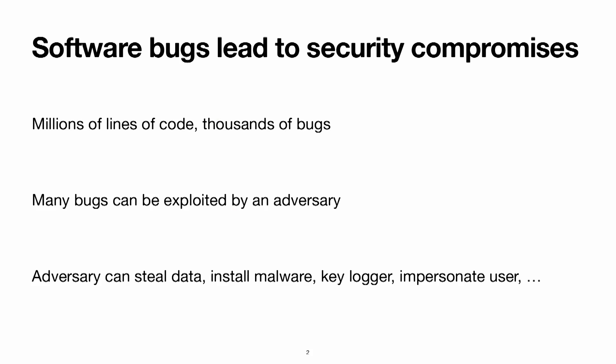The problem I'll address is a little different from the cryptography problems we've been looking at. I want to understand how we build secure computers that actually implement the math giving us nice security properties. Security often fails because we have very complicated systems — millions of lines of code on computers, phones, servers — meaning thousands of bugs. These bugs can be found by adversaries and exploited to steal data, install malware or keyloggers, impersonate us, and so on.